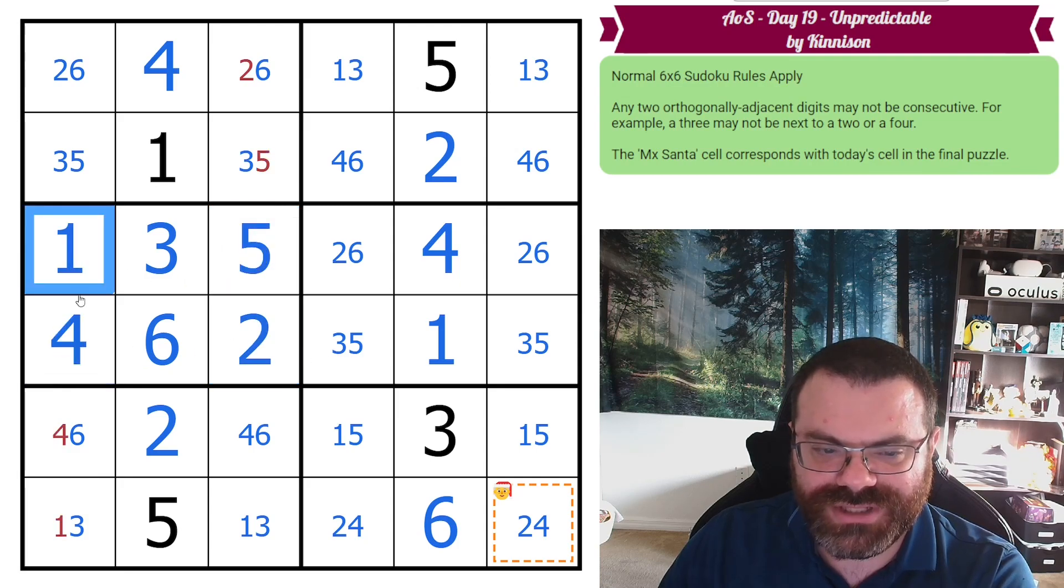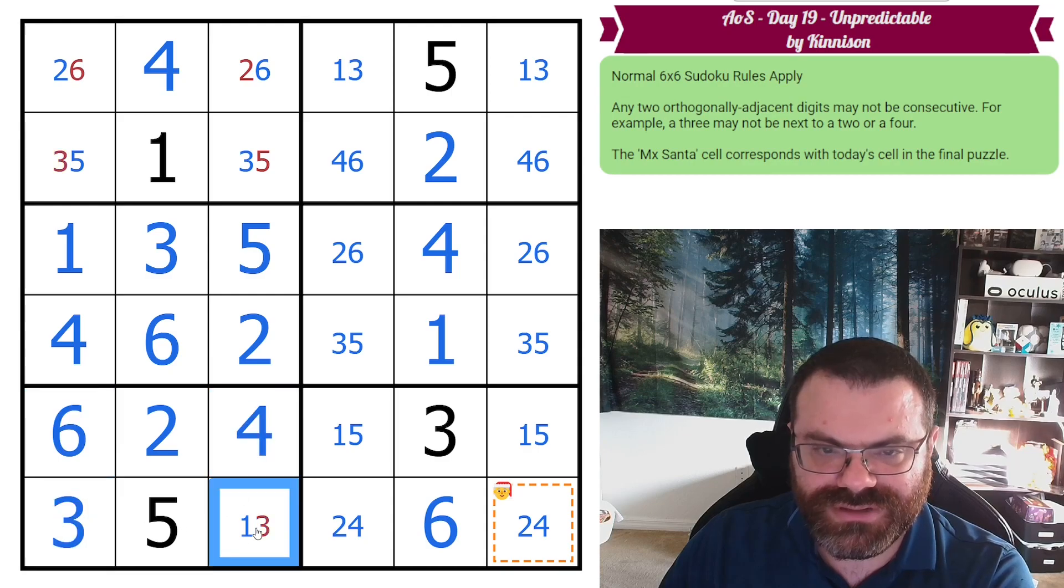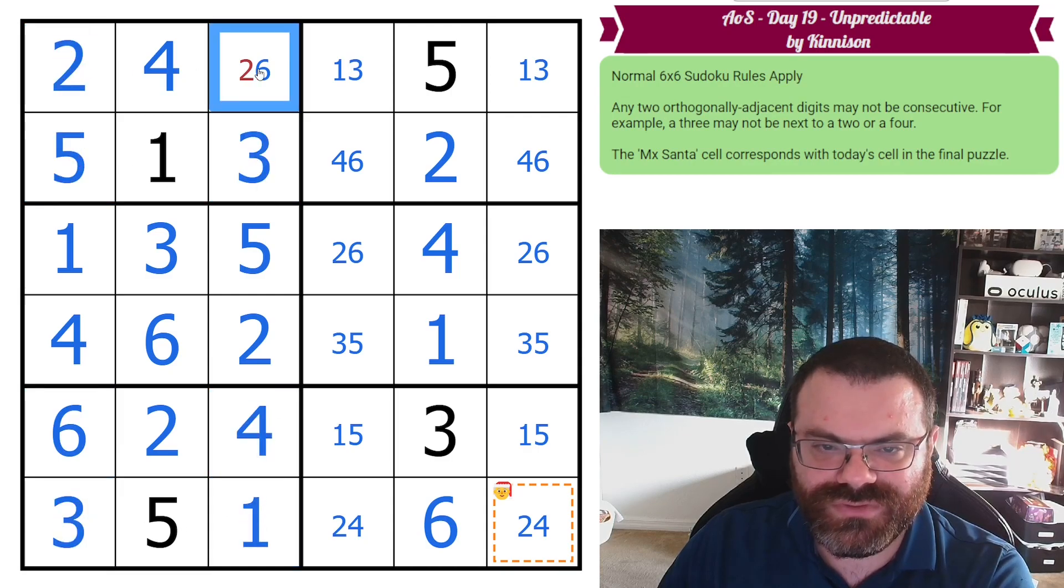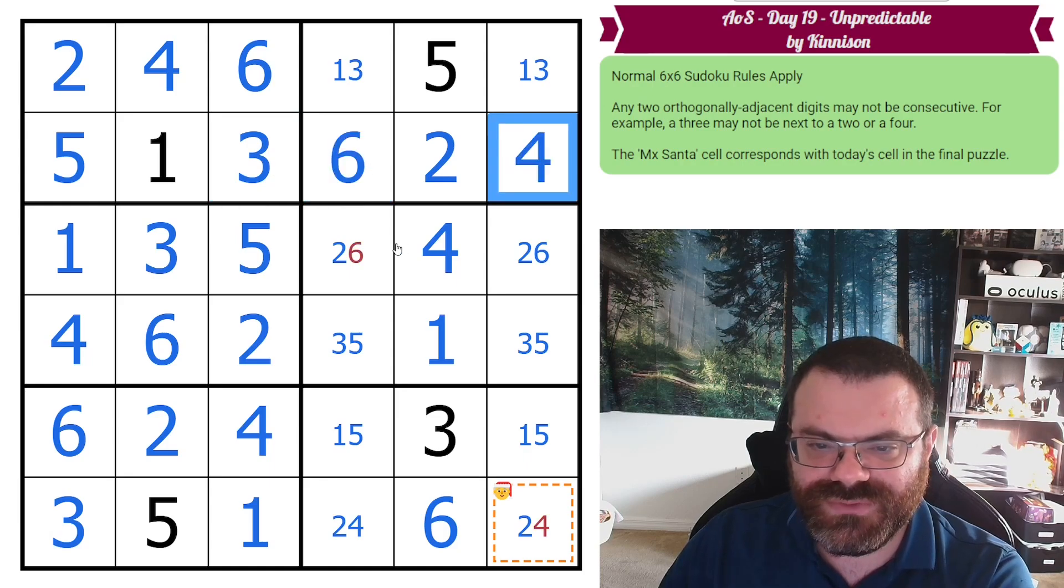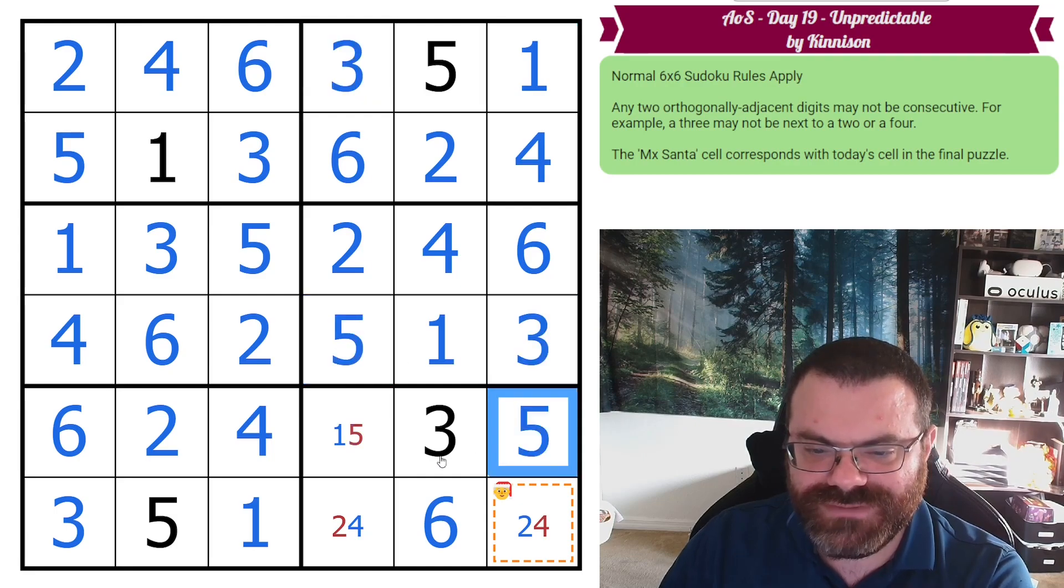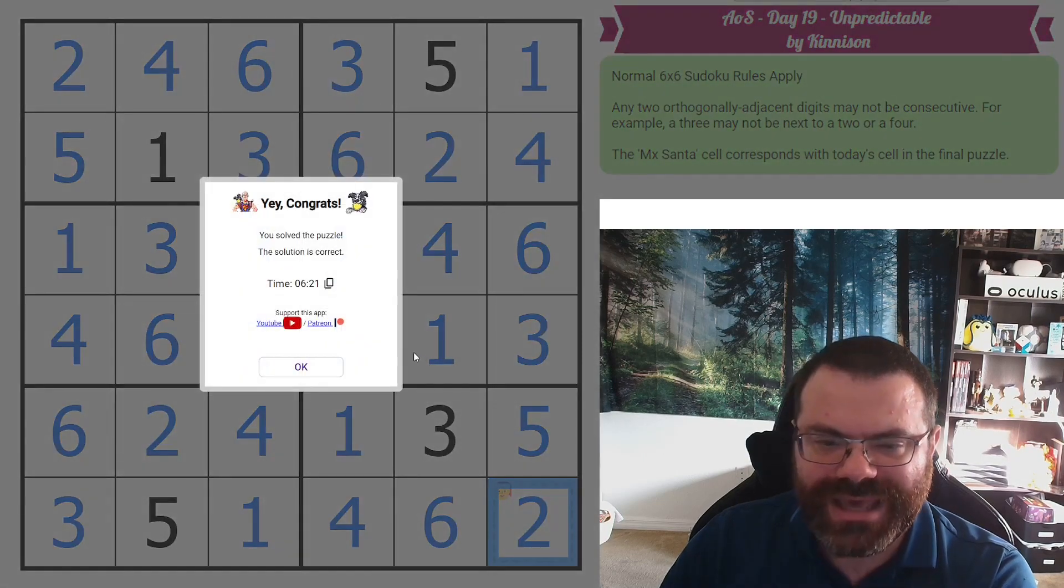2 can't be next to 1, so that's 5 and 1, 6 and 4, 3 and 1. The rest of this resolves by normal Sudoku. And then now this 3 can't be next to 4, so this is 6 and 4, this is 2 and 6. 4 can't be next to 3, so this is 1 and 3, 5 and 3, 5, 1, 4, 2, and we're done.